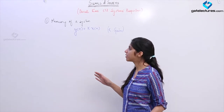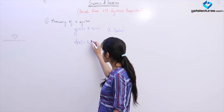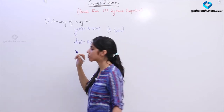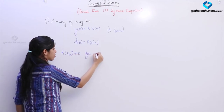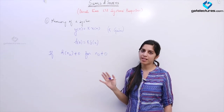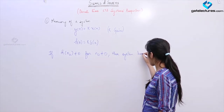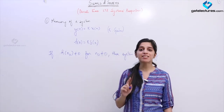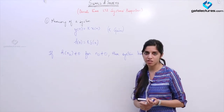For a system to be memoryless, the output and input can be related only by an equation of this form. The impulse response H(n) is going to be of the form k·delta(n). If H(n) is not zero for any value of n other than 0, then the system has memory. The impulse response should have a value only for n equals 0, with no sample at any other value of n. This is how we judge the memory of a system using its impulse response.